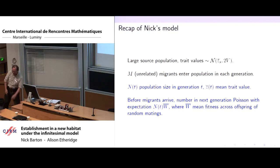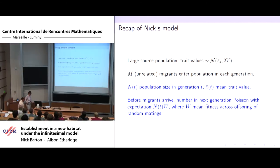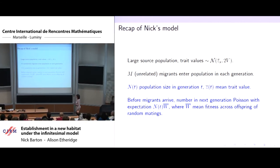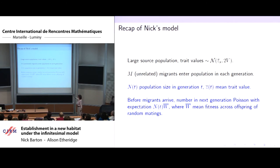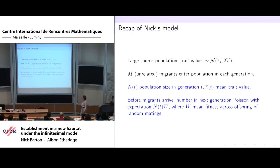Now Alison comes back to make everything clear. Just a recap of Nick's model: we had a large source population with trait values normally distributed with mean Z_s_bar and variance 2V (scaled to 1). In each generation we consider constant migration: M unrelated migrants enter the population. N(T) is the population size in generation T in the new population, the source population is essentially infinite, and Z_bar(T) is the mean trait value in this establishing population.